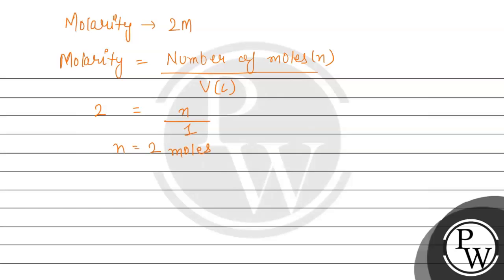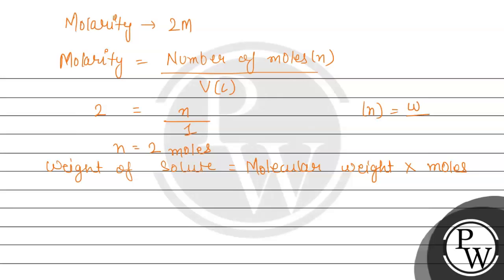Now we have number of moles, so we need to find the mass of the solvent. The weight of solute equals molecular weight multiplied by moles — because number of moles N equals weight of solute divided by molecular weight. So weight of solute equals molecular weight multiplied by moles, which is 60 multiplied by 2.